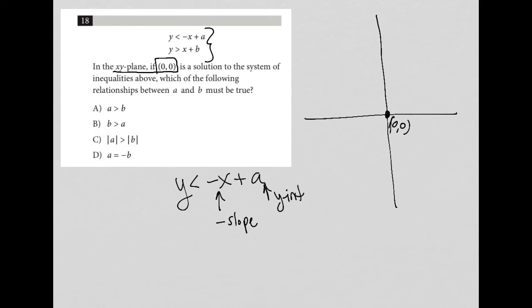So I'm going to shade beneath that line. Shade down because y is less than it. So if I want to shade down and capture (0,0) as a solution, and I want to have a negative slope, I'm going to draw a line this way because that gives me the negative slope.